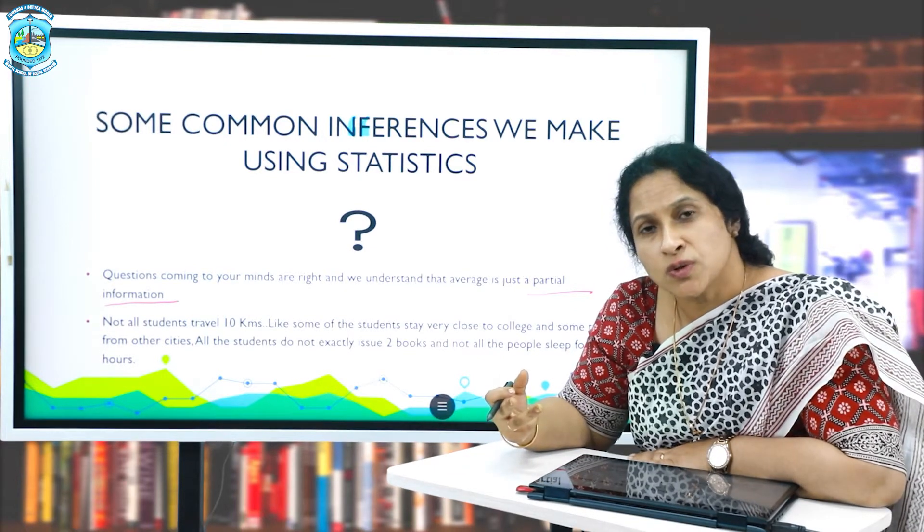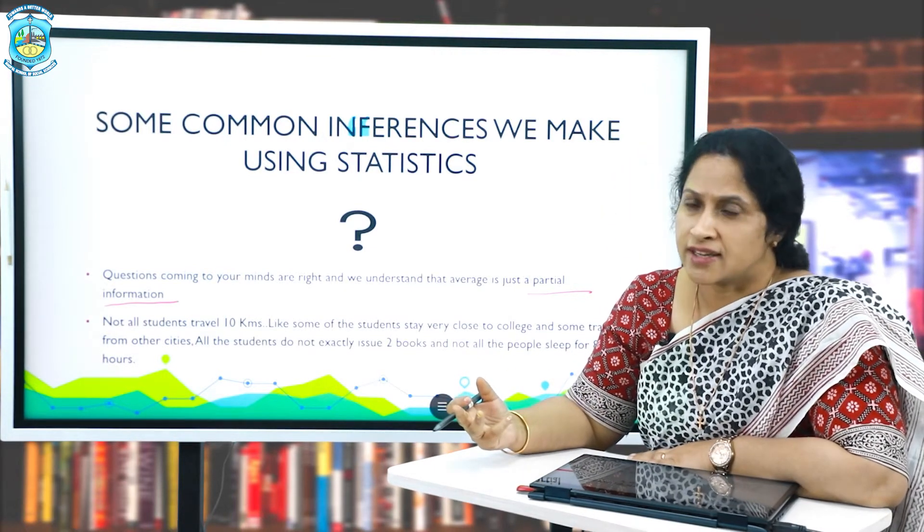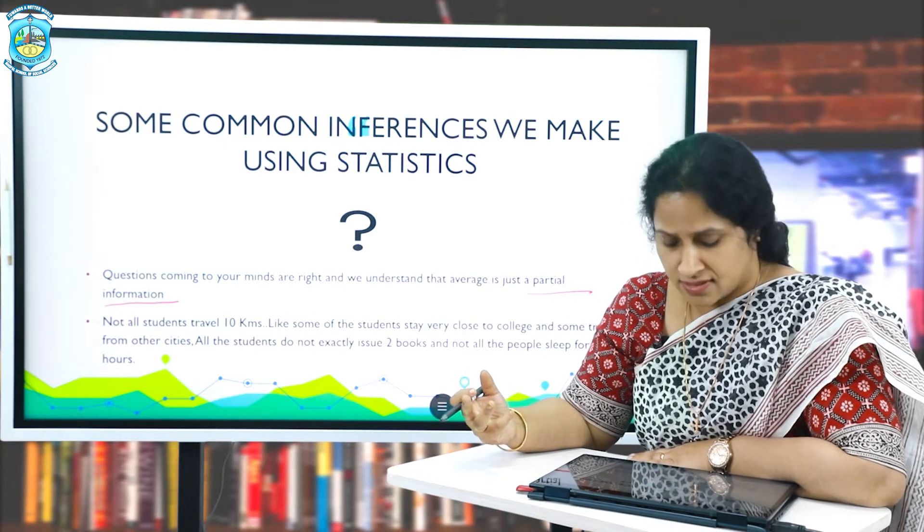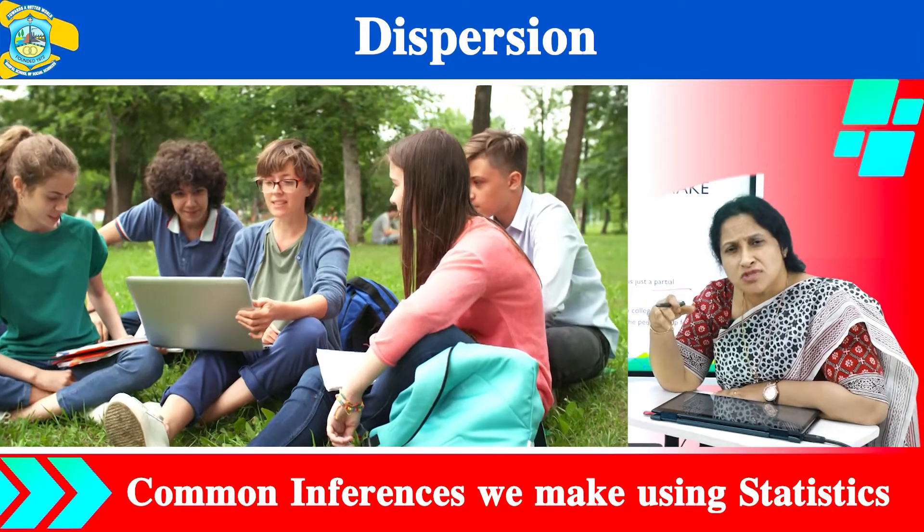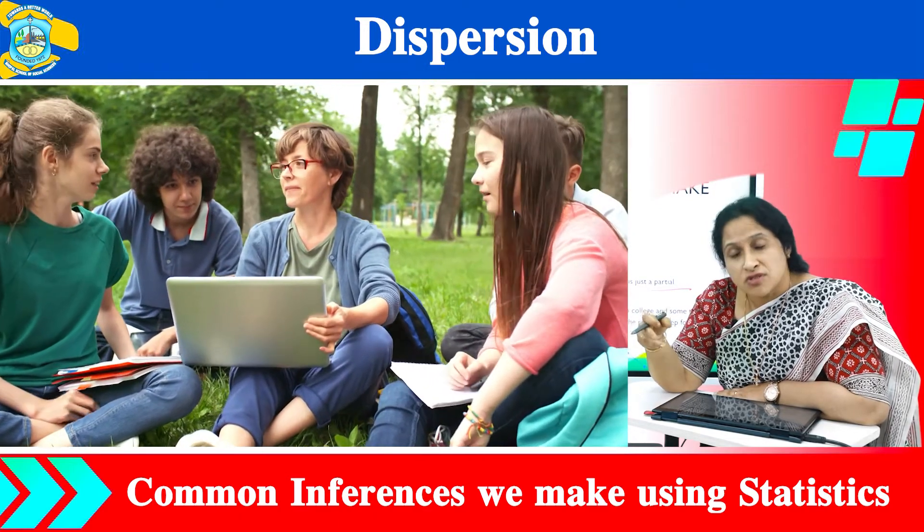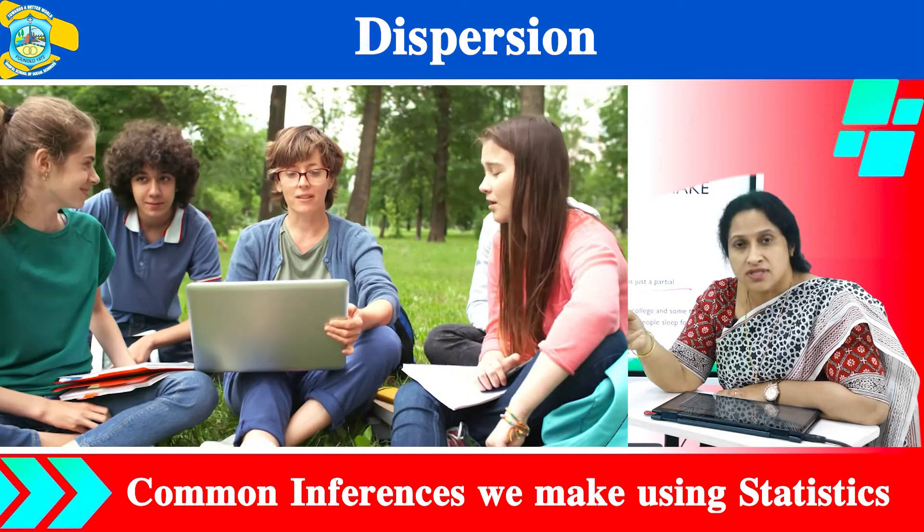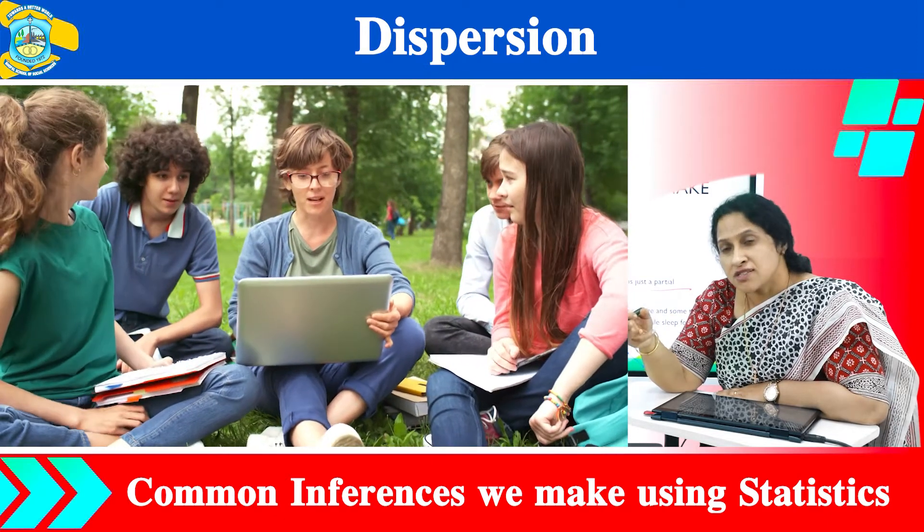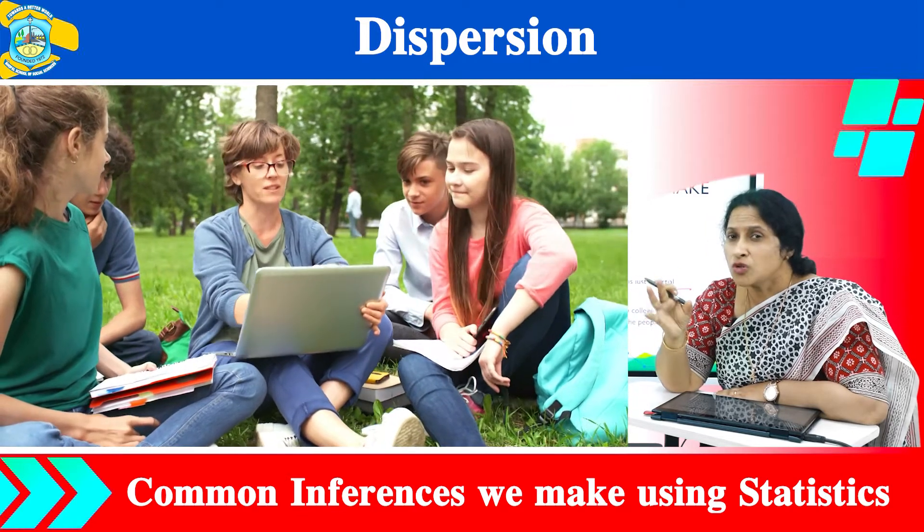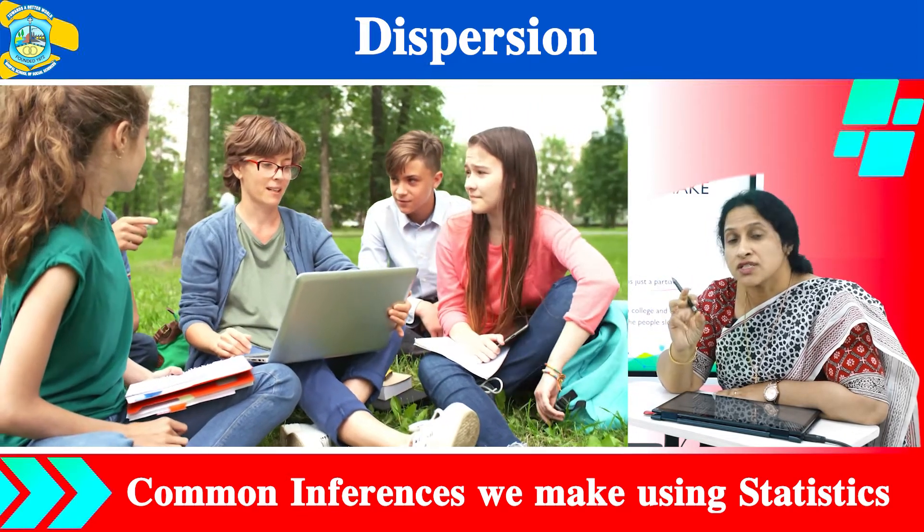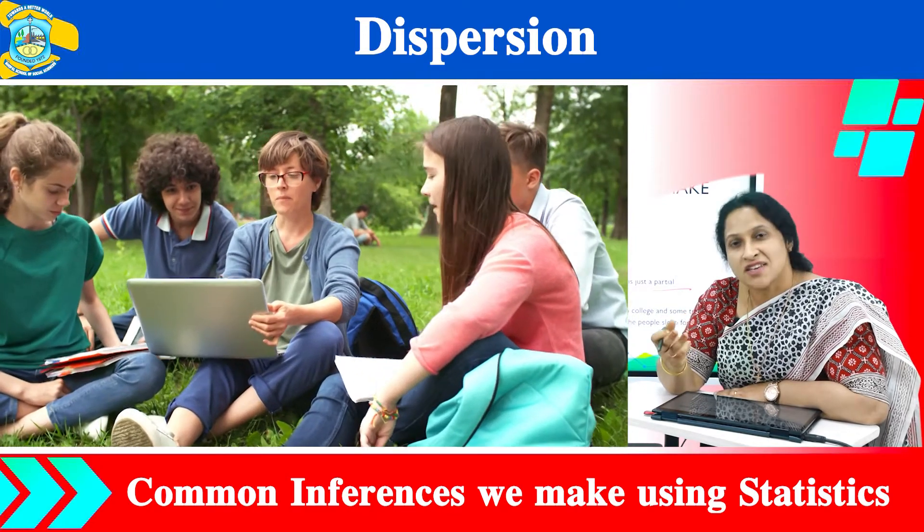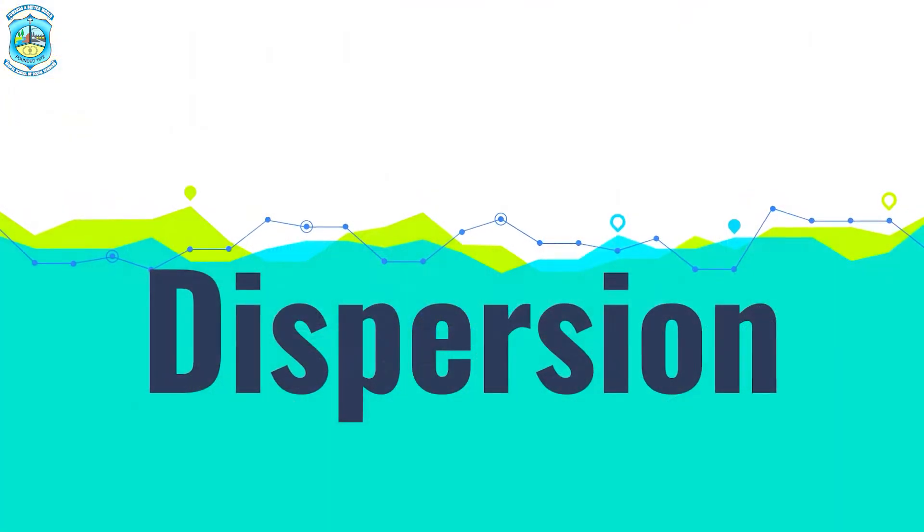Because from the examples we quoted, not all students travel 10 kilometers, not all are able to make a sleep of eight hours. Some of the students may be staying very close to the college. Some may not be taking two books at a time. Some of us may not be able to get four hours of sleep. So how do we make this partial information complete? This is through a measure in statistics which is given by the concept of dispersion.